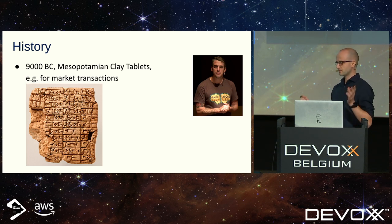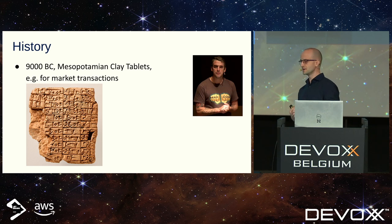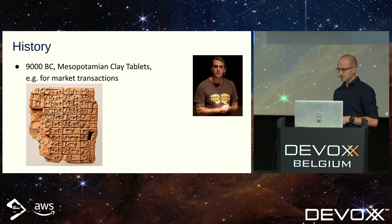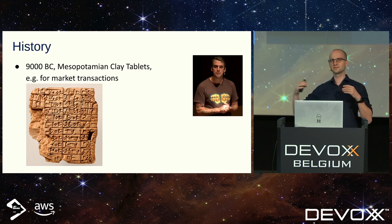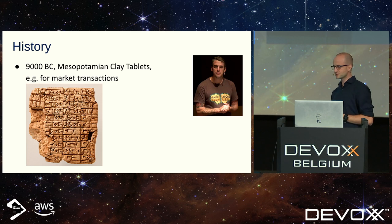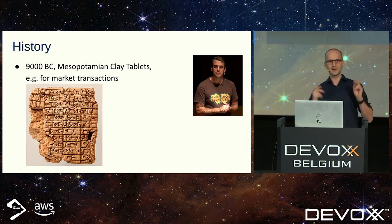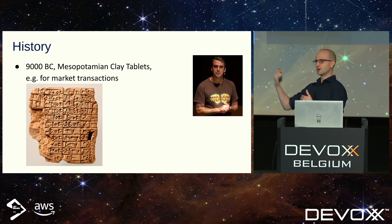A fun fact about event sourcing from one of Greg Young's presentations — Greg Young is one of the event sourcing evangelists, really nice materials and presentations. The fun fact is that humans have been using event sourcing for thousands of years. The first implementation was found on clay tablets in Mesopotamia 9000 years BC, used for persisting marketplace transactions — how many ships, bread loaves, grain were bought or sold. This way the Mesopotamian trader could easily recalculate the state of possession, not by counting ships but by replaying facts from those clay tablets.